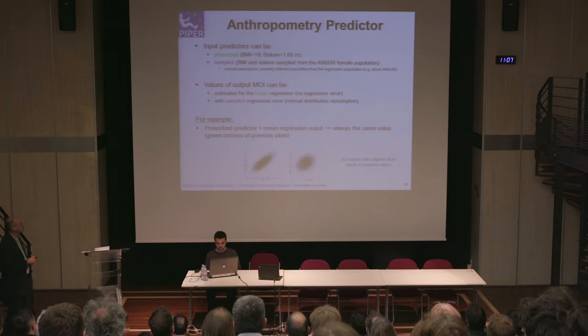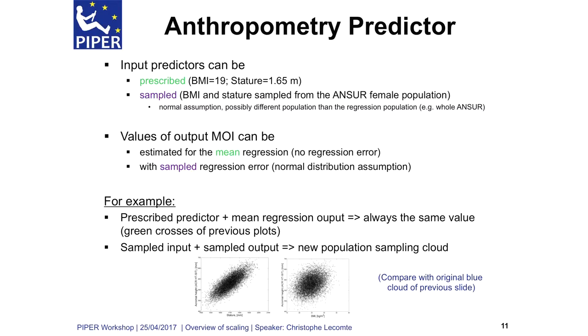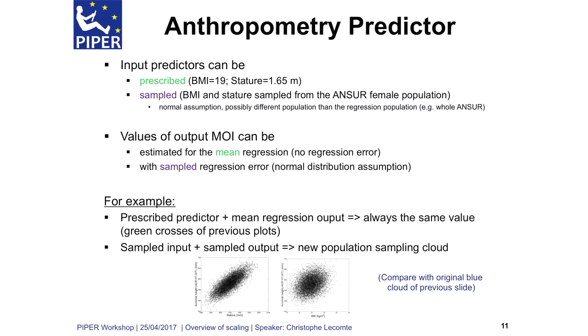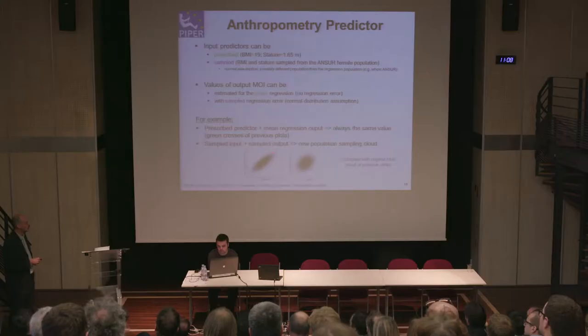If you prescribe the predictor and just look at the mean, you will always get the same target results. If you take samples for the input — BMI and stature — for example just a subject with some BMI and stature who are children age 12 to 14, you get random or sampled values of the input, and you can also include the regression error to get variance among the same population for the same predictor values. If you sample the same regression, you get points that correspond very well to the original data from the database.